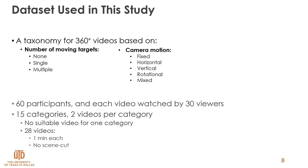In this study, we use a viewport dataset with 28 videos categorized based on camera motion and the number of moving targets. We have three different notions of the number of moving targets and five camera motion patterns for a total of 15 categories. However, because we could not find a satisfactory video for one category, we limited ourselves to 14 categories and two videos from each, for a total of 28 videos. The dataset has 60 participants and each video is watched by 30 viewers. These categories provide viewport traces with various characteristics, including the importance of moving objects and their effect on viewport change patterns.